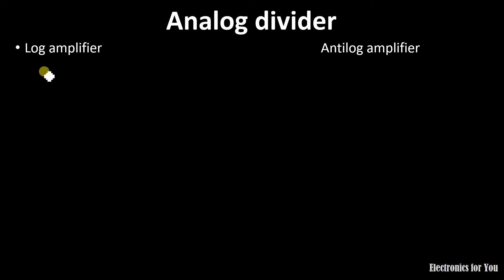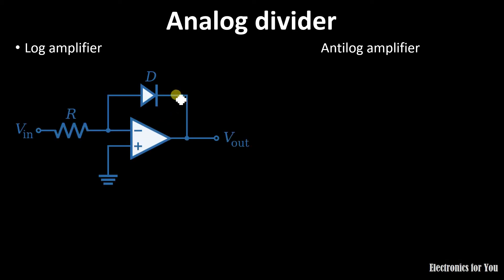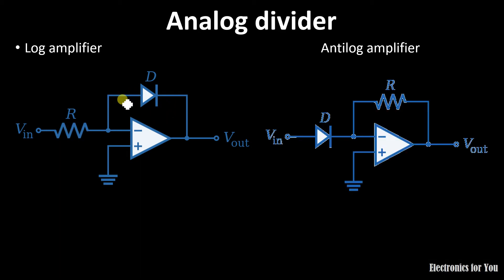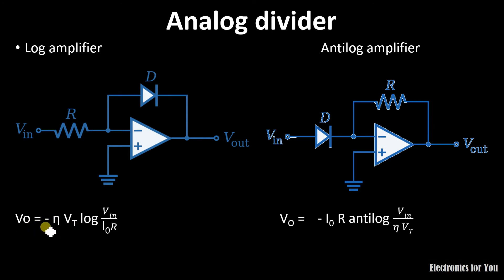Before understanding the analog divider, you should know log and antilog amplifiers. You can refer to the related videos in the description or click the I button. A log amplifier is an inverting amplifier in which the feedback resistance is replaced by a diode, and if the resistance and diode are interchanged, an antilog amplifier is obtained. The output voltage for a log amplifier is V0 = −η·Vt·log(Vin / I0·R), and for an antilog amplifier V0 = −I0·R·antilog(Vin / η·Vt).